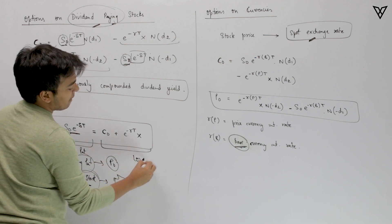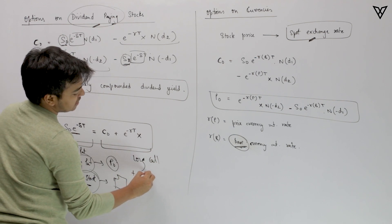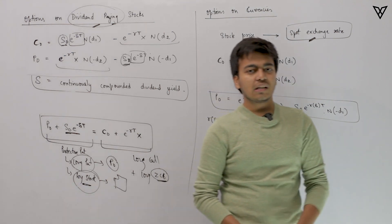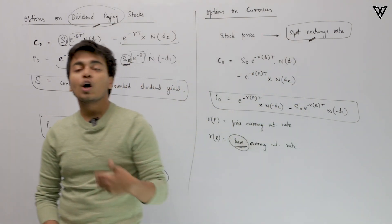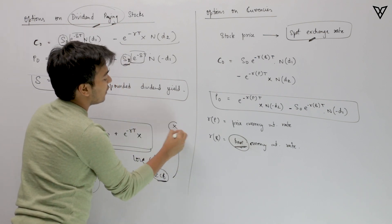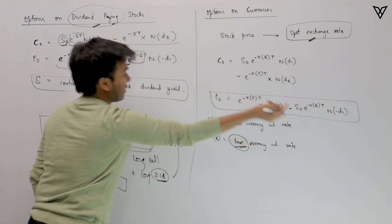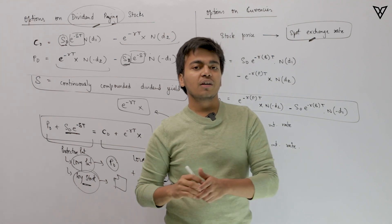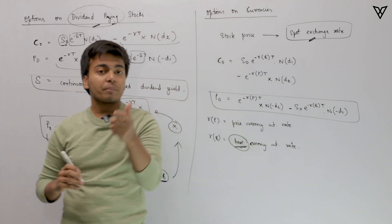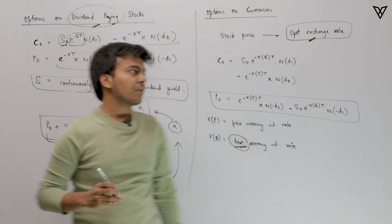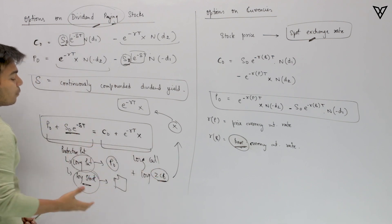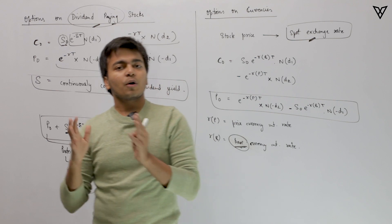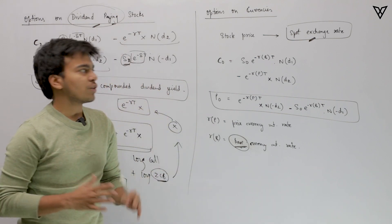For the fiduciary call, you need to go long call and at the same time go long a zero coupon bond (ZCB). To go long call, you pay the premium C0. Since you want to go long a zero coupon bond with face value X — in order to receive X at time period T — today you need to pay X × e^(−R×T). You discount X to today's price. That is your protective put equals fiduciary call, and we have verified this holds via an arbitrage example. We just need to make the proper adjustment for dividend yield to satisfy the equation.